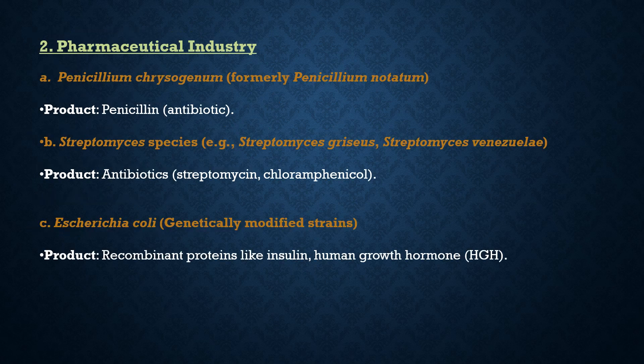Moving to the pharmaceutical industry, Penicillium chrysogenum — formerly known as Penicillium notatum — is the famous example used for antibiotic production, specifically penicillin. It works against bacterial cell wall formation. The advantage is it is highly effective against a wide range of bacterial infections and was one of the first and most common antibiotics. The disadvantage is that some microbes have developed resistance, such as MRSA (methicillin-resistant Staphylococcus aureus), and allergic reactions in some individuals have been observed.